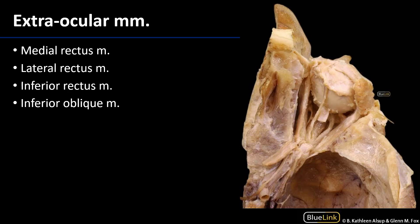Going deeper within the orbit and removing a little bit of neurovasculature, we can see several more muscles: the medial rectus, the inferior rectus, and the lateral rectus muscle. This isn't a fantastic view, but one can barely see the inferior oblique muscle there as well — though you're better off seeing that muscle from an anterior view. So we've discussed the muscles of the orbit — both orbicularis oculi as well as the extraocular muscles — and their relationships within the orbit. Thank you very much for your time.